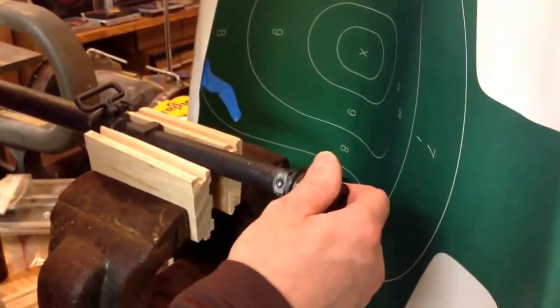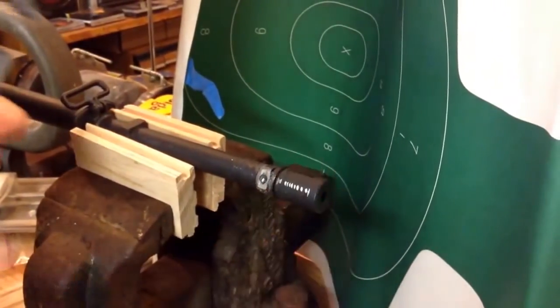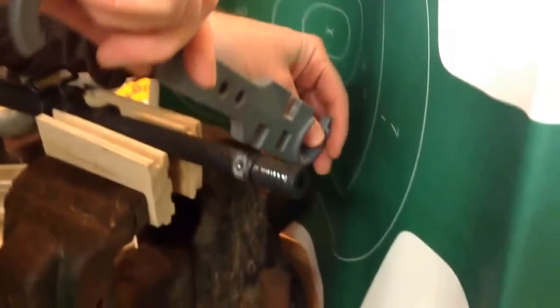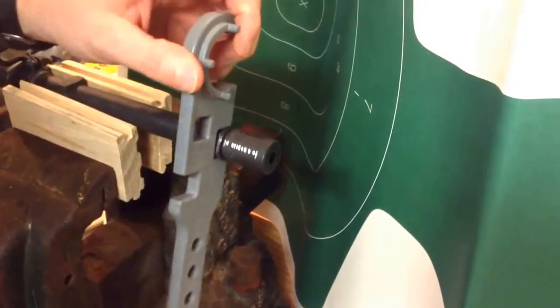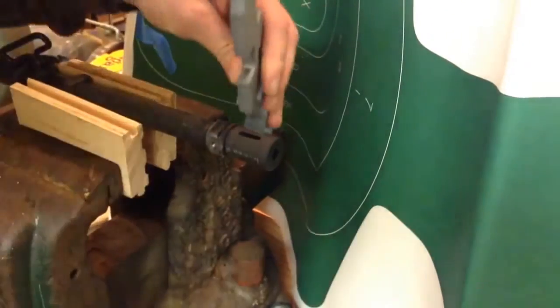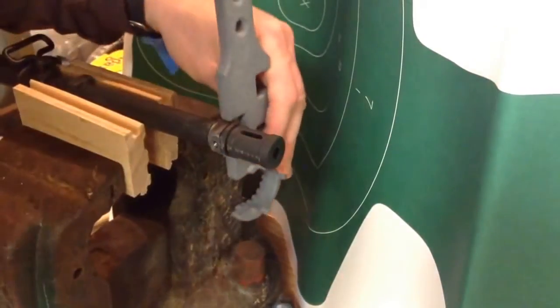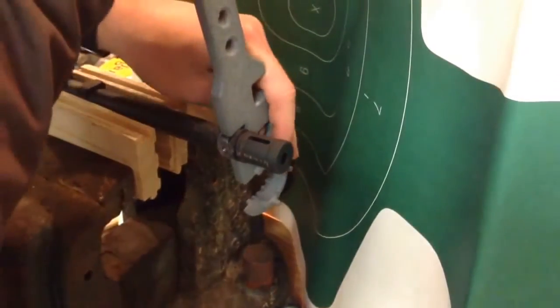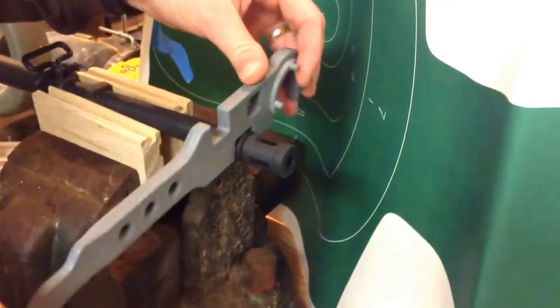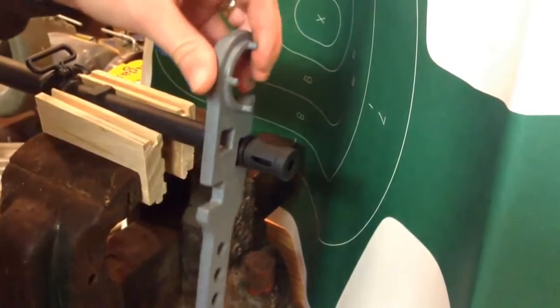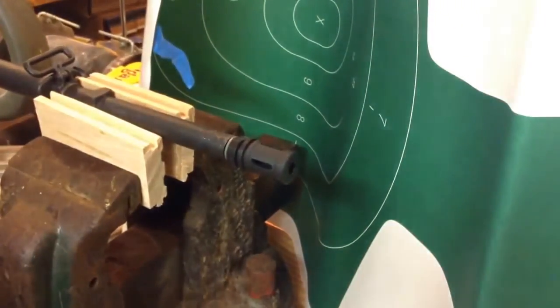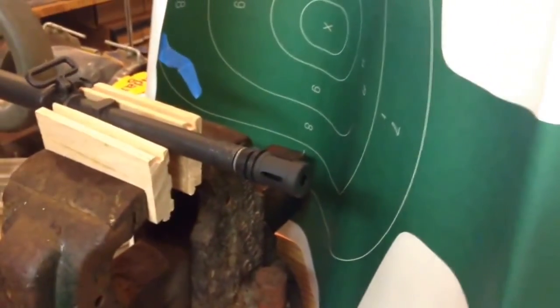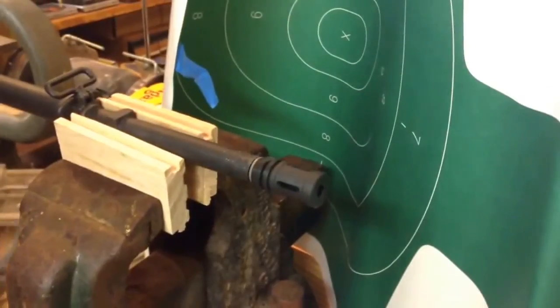And then I think it sheared the rest of the pin and I can continue to turn the flash suppressor off of the barrel relative to the barrel. And I want to continue doing that and hopefully I find that the barrel threads are in good shape and then I'll go from there.